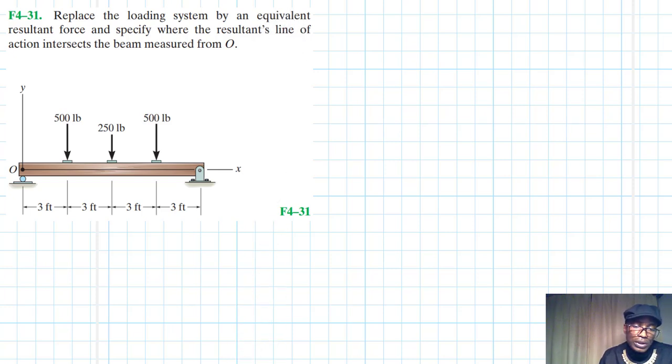Hello, I welcome you all to this another interesting screencast and the problem reads: Replace the loading system by an equivalent resultant force and specify where the resultant's line of action intersects the beam measured from O. This problem is coming from the Engineering Mechanics Statics textbook, 10th edition by R.C. Hibbeler.